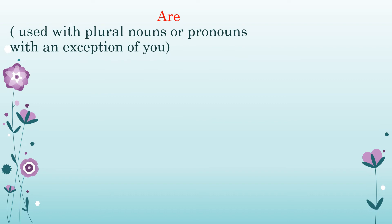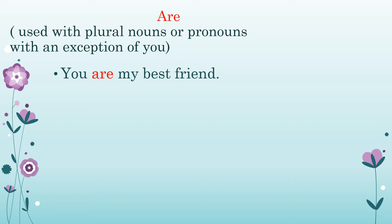Now let's learn about are. Are is used with plural nouns or pronouns, with an exception of you. You can be singular or plural. Look at this example: You are my best friend — here we are saying best friend, which means only one friend. You are my friends — here we are saying friends, that means more than one. Still we use: you are my friends.